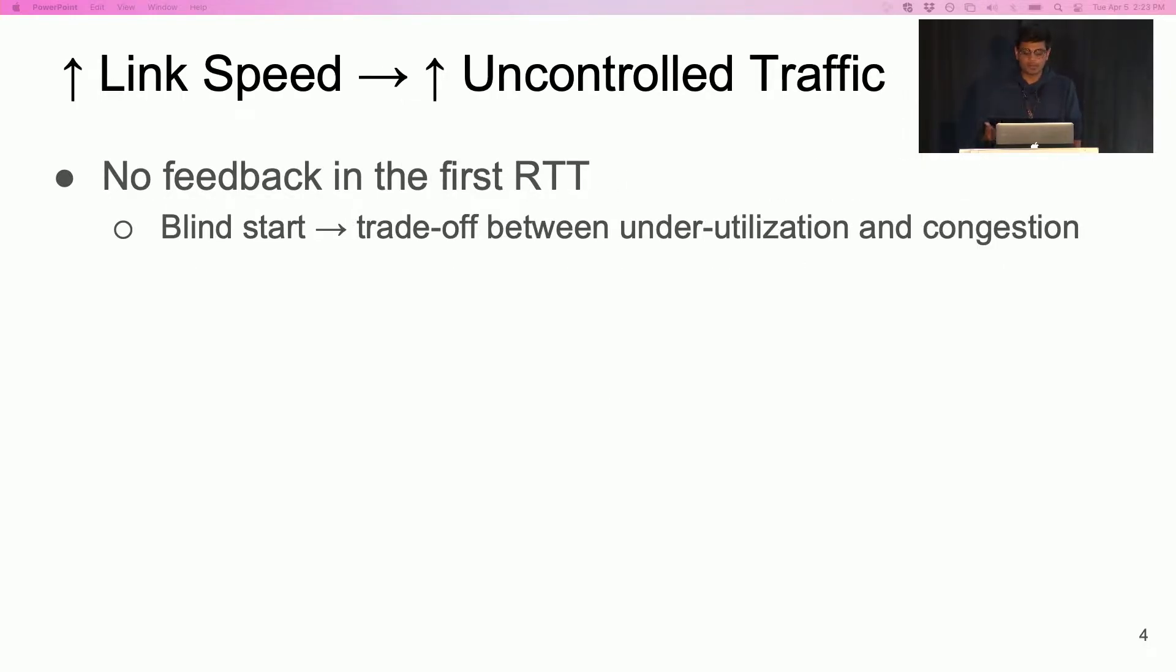First, with end-to-end feedback loops, the sender only receives feedback after the first RTT. As a result, at the start, the sender has no knowledge about congestion in the network. The sender can start at a low rate and risk underutilization. Starting at a high rate can cause congestion. As link speeds increase, more flows finish within the RTT and the amount of such uncontrolled traffic in the network increases.